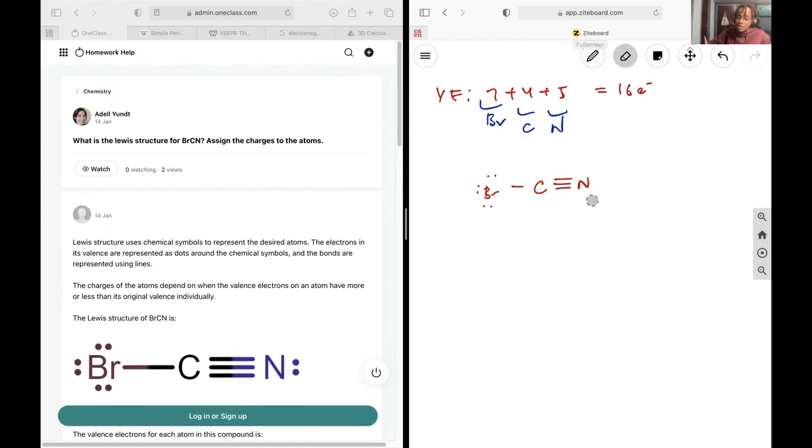If you'd like to double check the formal charges, you will see bromine, as expected, will have 7 valence electrons minus the 6 in lone pairs minus the 1 in the bonding pair, giving you a formal charge of 0. Carbon will have 4 minus the 4 electrons in bonding pairs, yielding 0. Nitrogen will have 5 minus the 3 in bonding pairs minus the 2 in lone pairs, giving you 0. So formal charges have been minimized, and this will be our final structure.